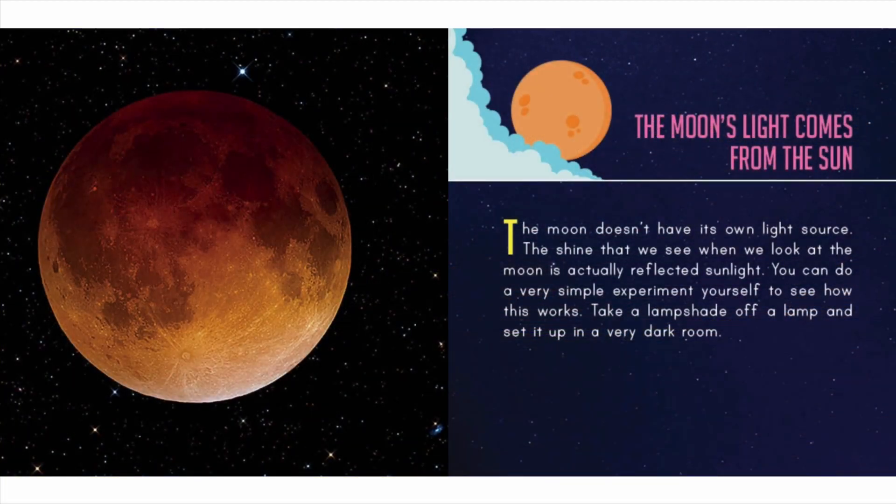The moon's light comes from the sun. The moon doesn't have its own light source — the shine that we see when we look at the moon is actually reflected sunlight. You can do a very simple experiment yourself to see how this works.